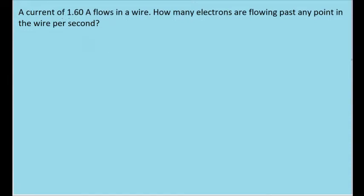In this problem, we are given the current flowing through a wire, and we're looking for the number of electrons that pass through any point in the wire per second.